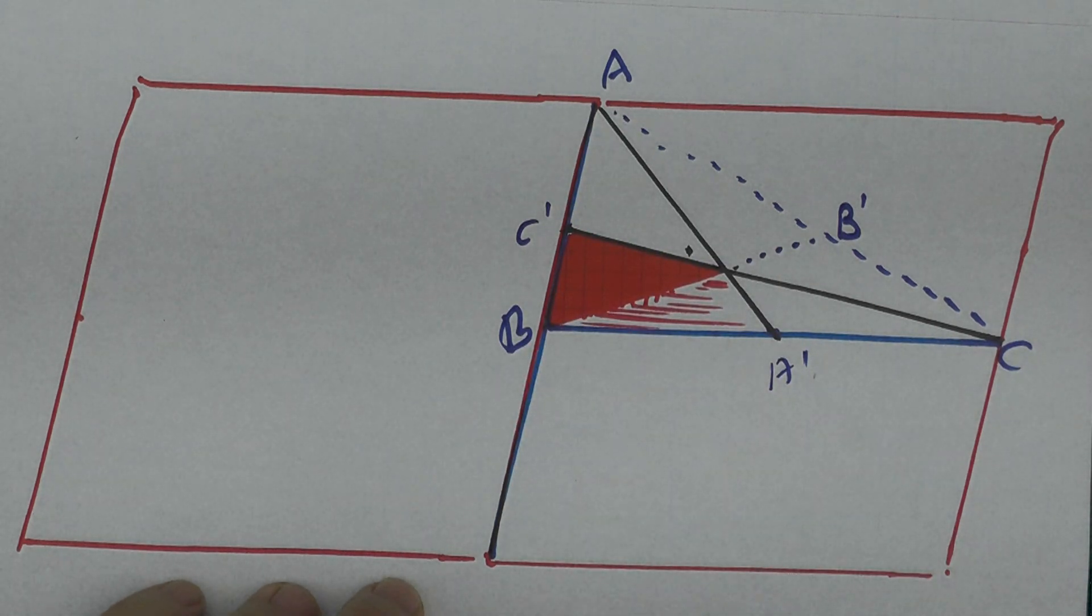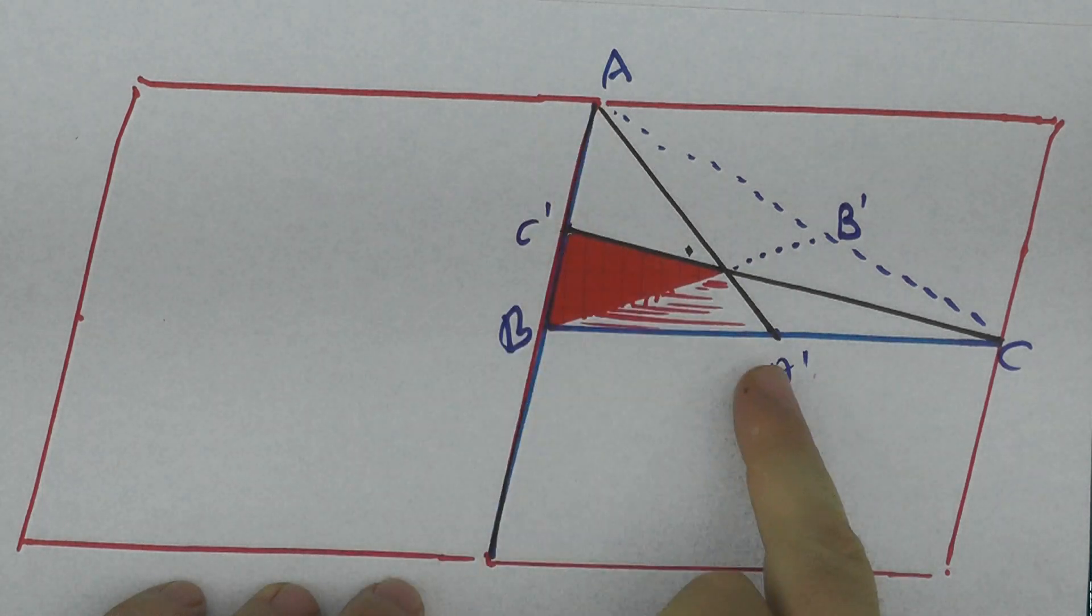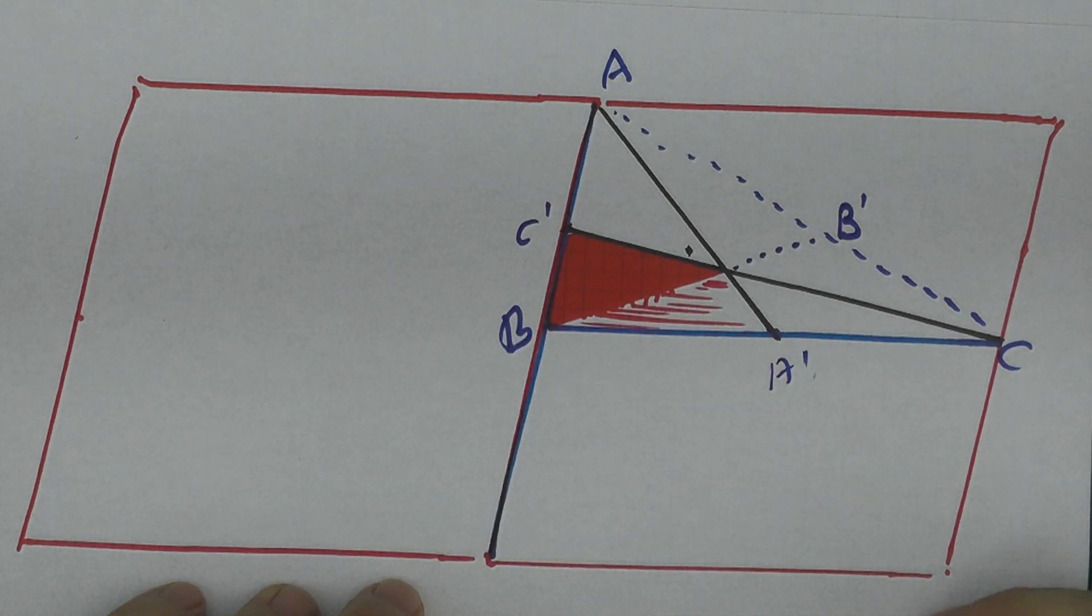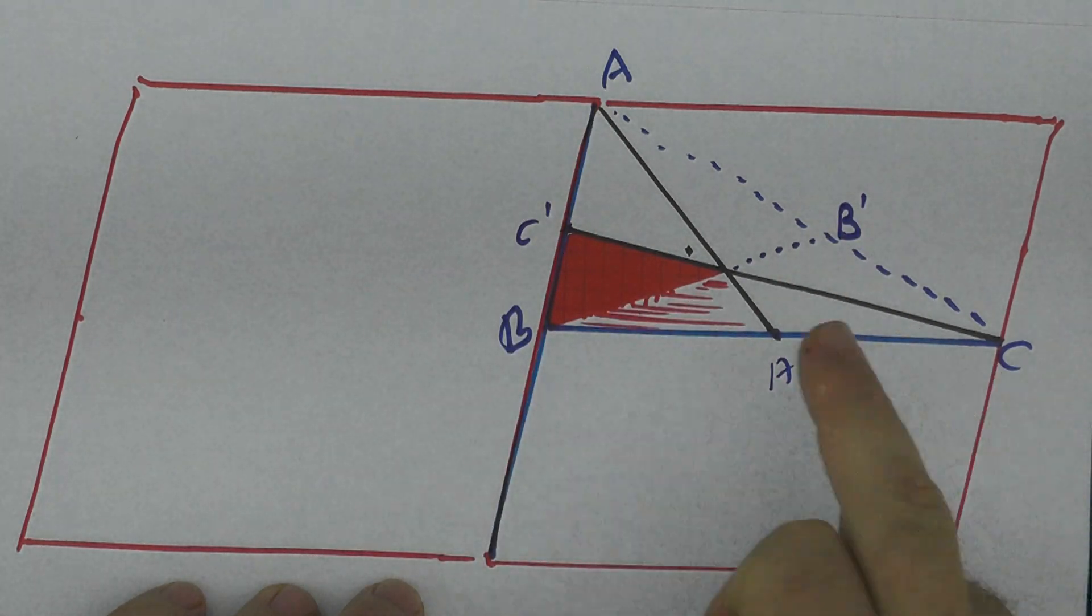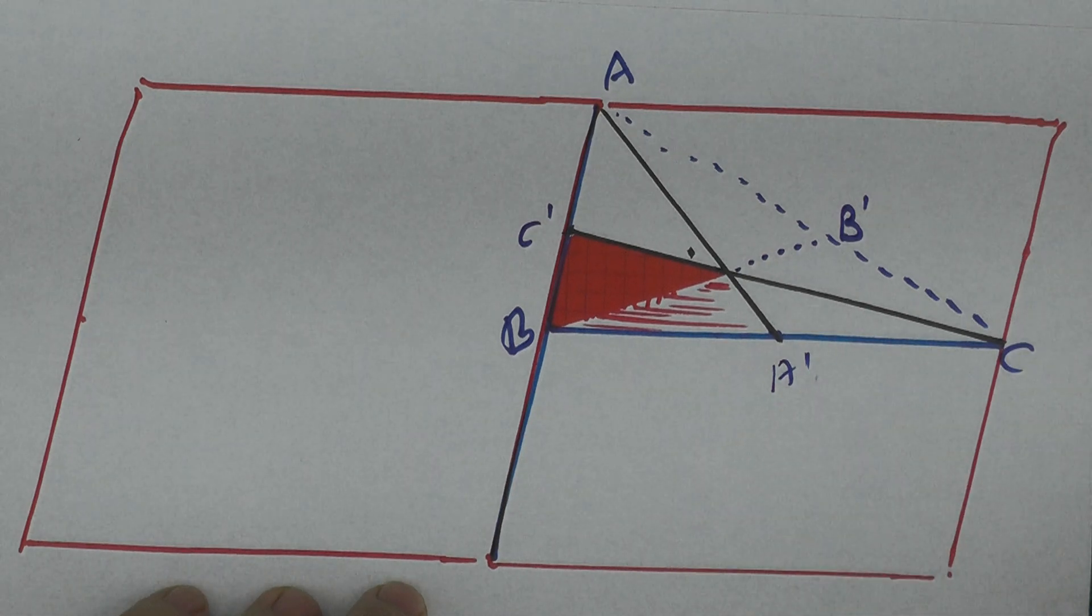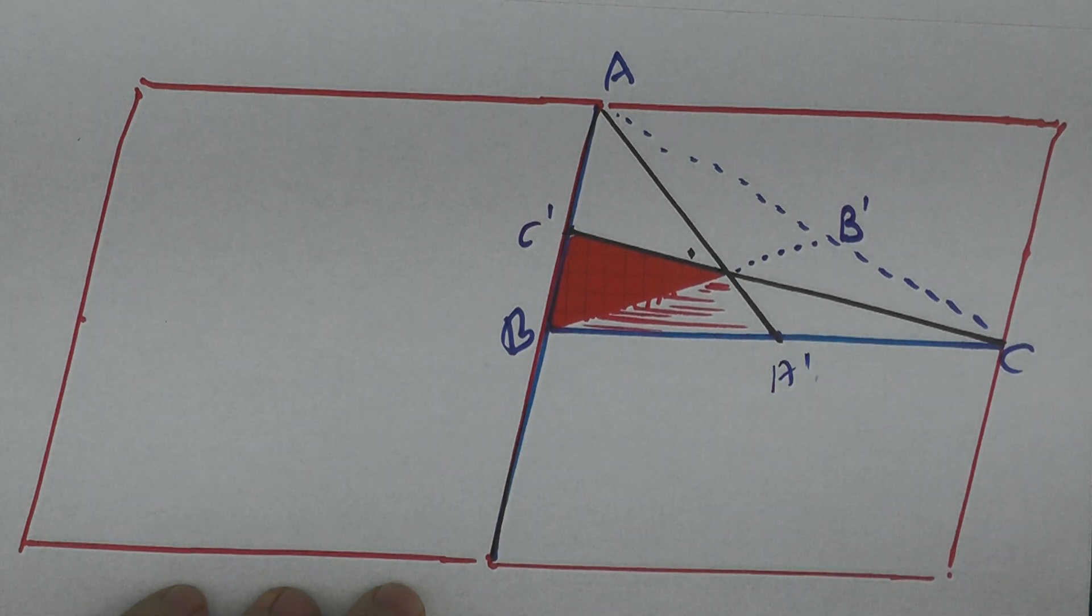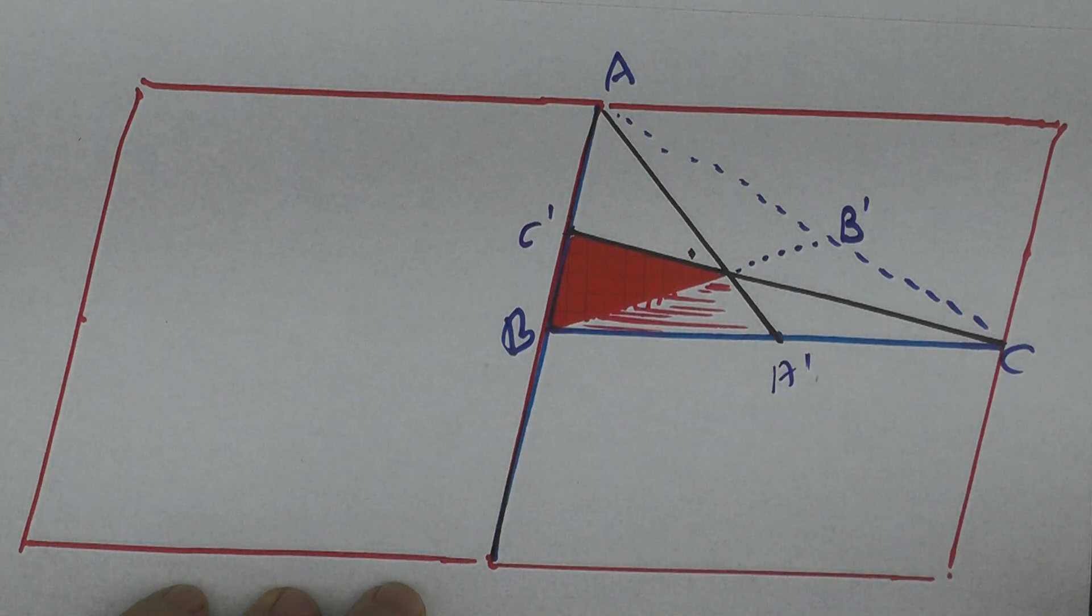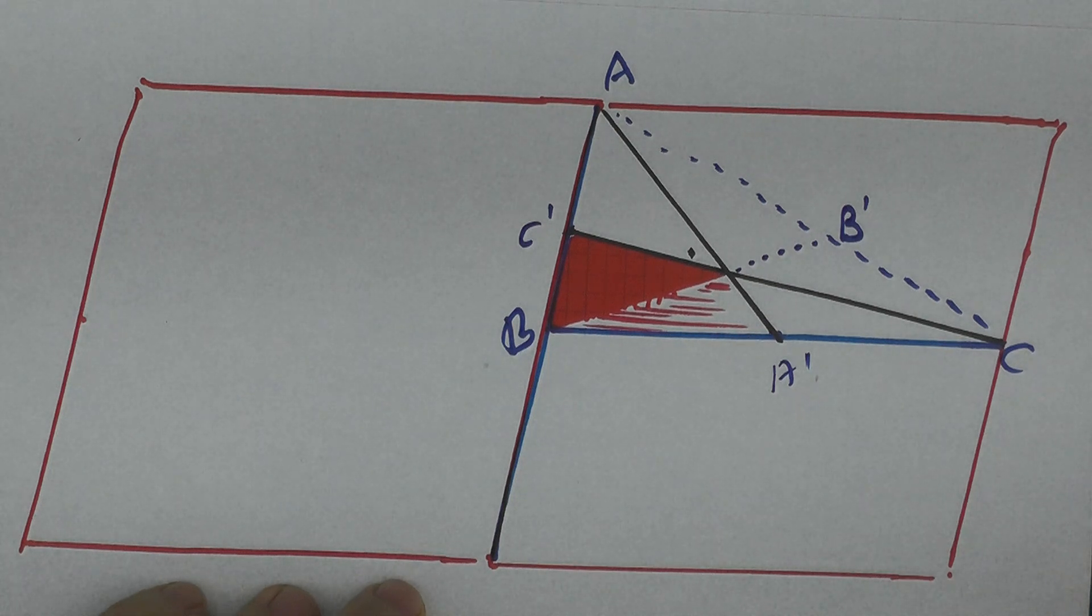But notice that in this triangle AA' is exactly a median, CC' is also a median, and therefore BB' is a median, and we have here three medians that divide the triangle into six parts, and we would like to show that this part is 1 over 6 of one of those six parts, and this is really trivial to show.